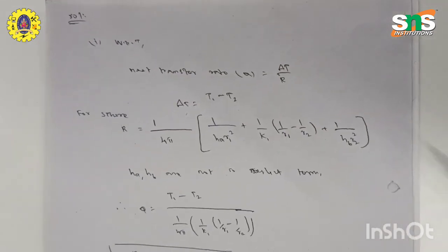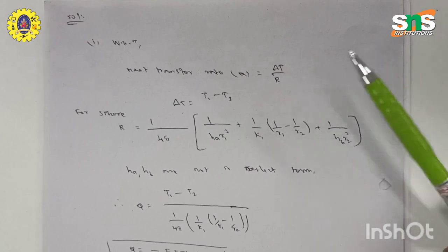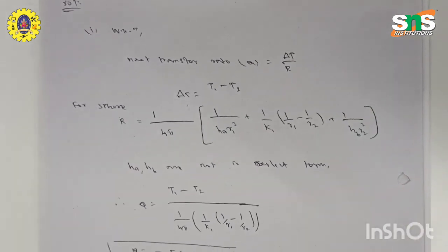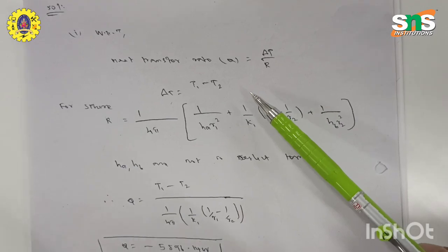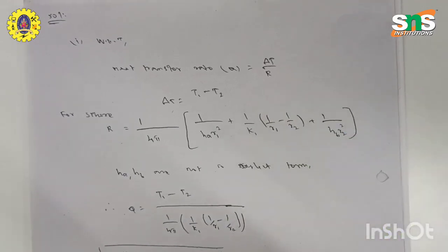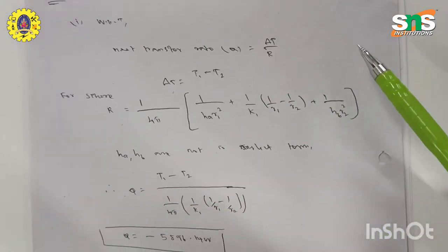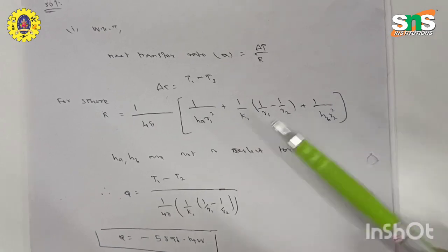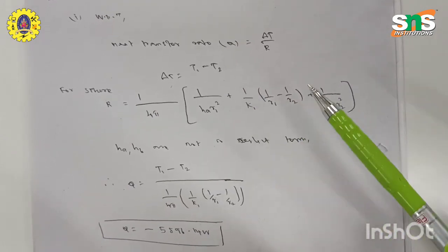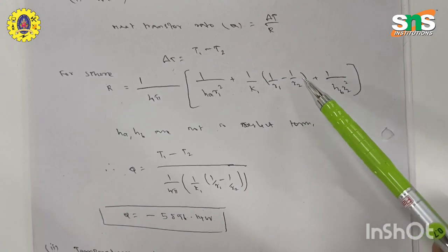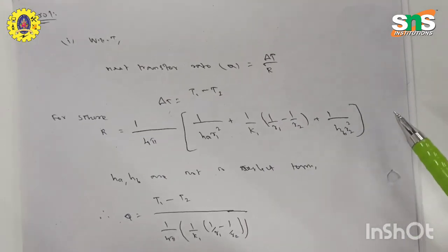The heat transfer rate formula is Q = ΔT / R_thermal, where ΔT = T1 − T2 and the thermal resistance for a sphere is R = 1/(4π) × [1/(h_A × R1²) + (1/K1) × (1/R1 − 1/R2) + 1/(h_B × R2²)].